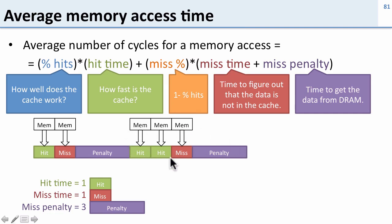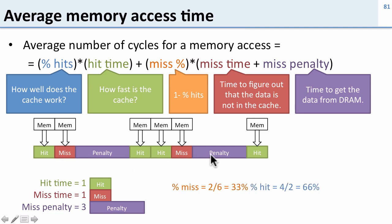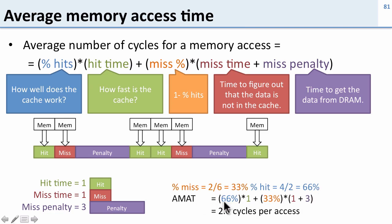Let's calculate the average memory access time for these instructions. We had two misses out of a total of six memory accesses, so the miss ratio is 33% and the hit ratio is 66%. AMAT is then 66% times one cycle for a hit, plus 33% times one cycle for the miss time plus three cycles penalty. This works out to two cycles per memory access on average.